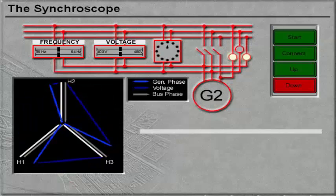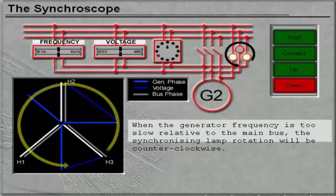When the generator frequency is too slow relative to the main bus, the synchronizing lamp rotation will be counter-clockwise.